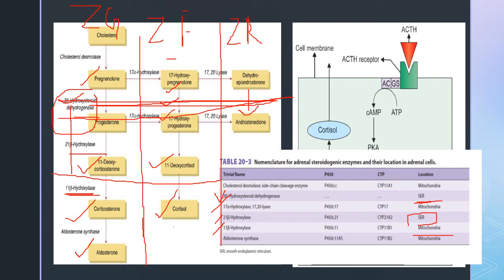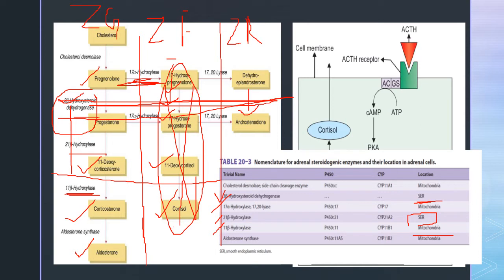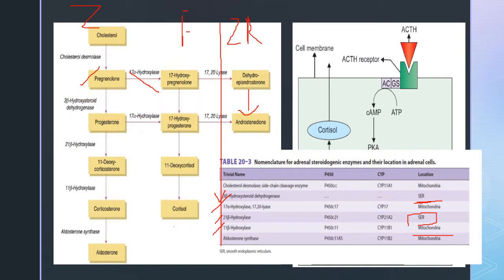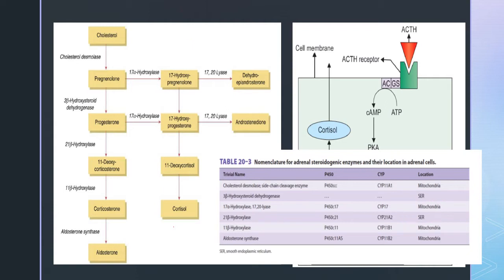Zona glomerulosa also lacks 17-alpha-hydroxylase, so the vertical chain of reactions leading to cortisol and androgens is absent there. Zona glomerulosa is meant only for synthesis of aldosterone because aldosterone synthase is exclusively located there and 17-alpha-hydroxylase is absent. Thus: glomerulosa → aldosterone, fasciculata → cortisol, reticularis → adrenal androgens.